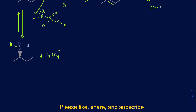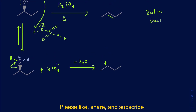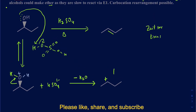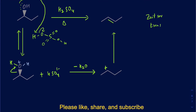In the next step, we can get rid of the leaving group now because water is a good leaving group. So when you get rid of water, you make a secondary carbocation. As soon as you make the carbocation, look around and see if you can make a more stable carbocation. In this case we can't, so we just leave it there. Since this is an acid-catalyzed reaction, we have to retrieve the acid at the end, and it's going to remove the proton from the adjacent carbon.